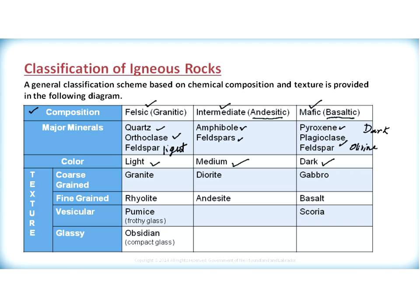When we get into texture, the classification chart shows that each composition of igneous rocks can have different textures, and those textures depend on the crystallization environment. Coarse-grained rocks generally form in a plutonic environment, whereas fine-grained rocks generally form in a volcanic environment. So granite and rhyolite would have the same felsic composition, but granite would be coarse-grained whereas rhyolite would be fine-grained.